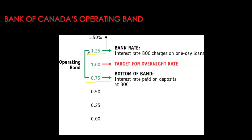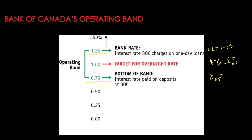When the Bank of Canada announces the target, it also announces the upper and lower limits of the operating band. The upper limit is typically 25 basis points (0.25%) higher than the operating target — this upper limit is called the bank rate. So if the target is 1%, the bank rate is 1.25%. The Bank of Canada also announces the lower limit, the deposit rate, which is 0.25% below the target — so in this case, 0.75%.